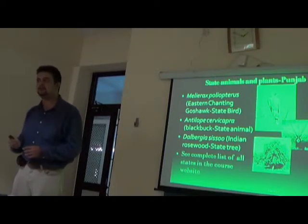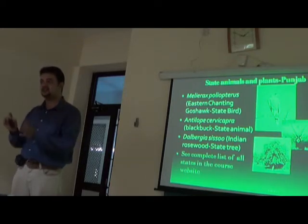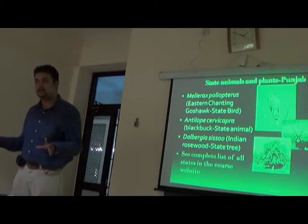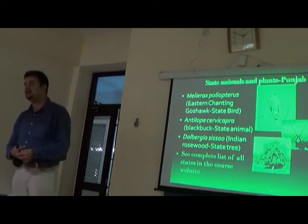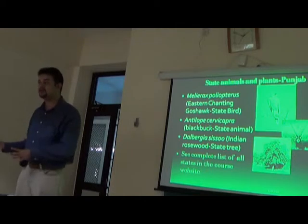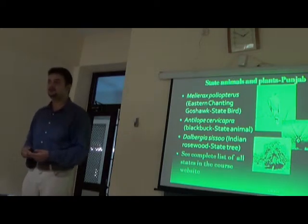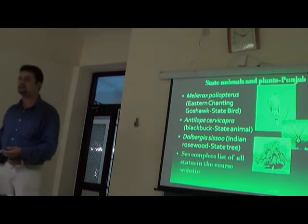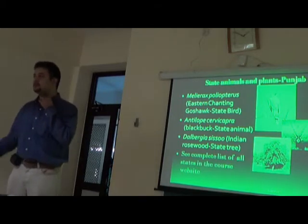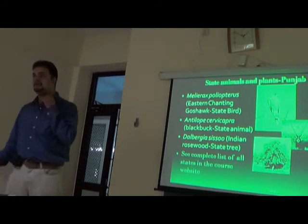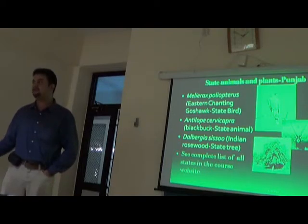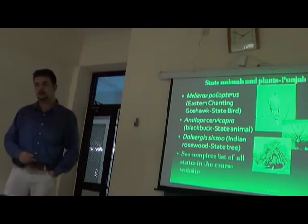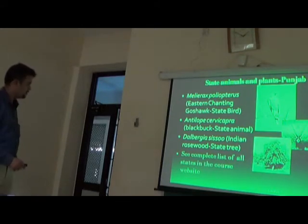Make a priority list: start with state animals, national birds and animals, then commonly found neighborhood species, and economically important ones. For bacteria, prioritize pathogenic species; for animals, prioritize commercially significant or domesticated ones. Make it a habit to memorize ten animals or plants each day and review weekly. Identifying organisms and memorizing their names are entirely different tasks — identification requires authoritative reference books.